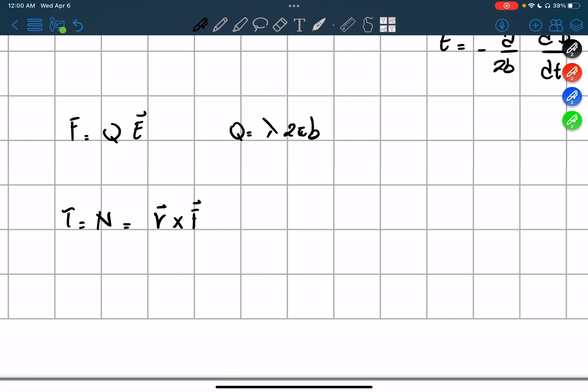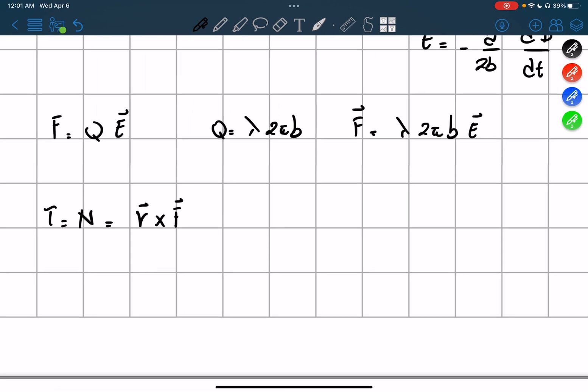So we found that the force equals lambda 2 pi B times our electric field. And the radius instead, it just simply equals to B, because we're talking about the outer radius. So we're going to have B cross F. Now we're imagining that these two are perfectly perpendicular, so we can just say B times this part right here.